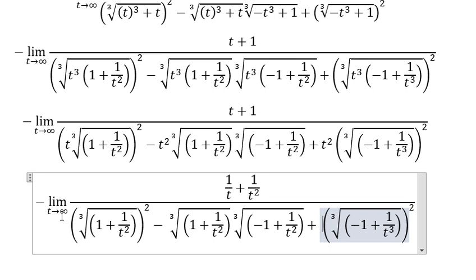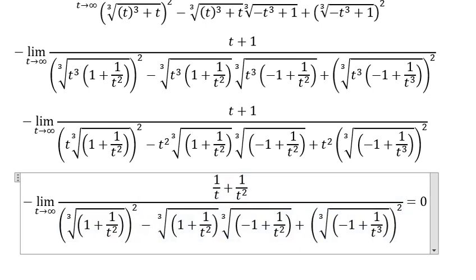When t approach to positive infinity, 1 divided by positive infinity you got number 0 and number 0 in here. So that means the answer is number 0. This is the end, thank you for watching.